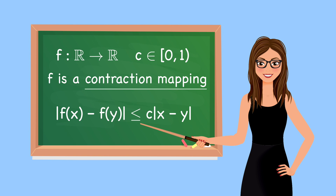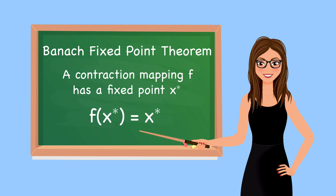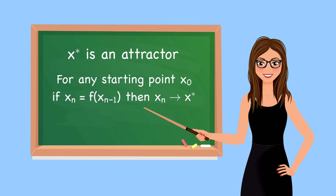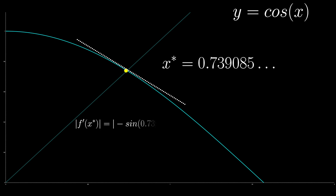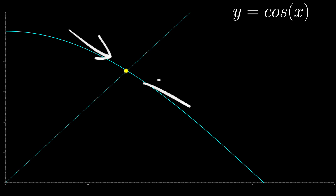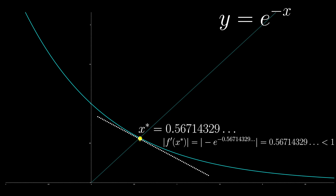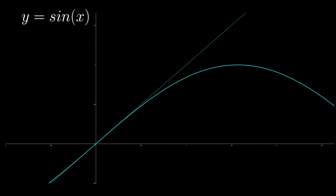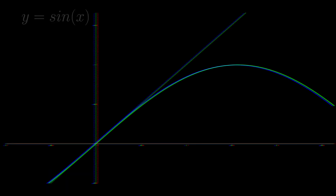In other words, a contraction mapping is bringing points closer and closer together. The Banach Fixed Point Theorem states that for any metric space like the real numbers, or a continuous range thereof, a contraction mapping on that space will have a fixed point. Moreover, that fixed point is an attractor, and any iterated sequence from any starting point will converge to it, if the absolute value of the derivative is less than 1. In the case of cosine, the derivative is less than 1 at the fixed point, thus it obeys the Banach Fixed Point Theorem — it is a contraction mapping between -1 and 1, but quickly converges from all points. Another function where this works is exponential decay, where the derivative at the fixed point is again less than 1. Although it converges from all points, it is only a contraction mapping through all positive values of x. Now let's look at the sine function: its fixed point is at 0, but its derivative there is exactly 1, so it does not conform to the Banach Fixed Point Theorem and converges very slowly.